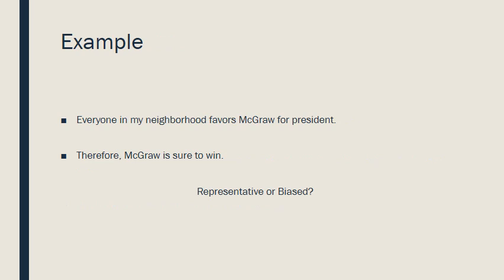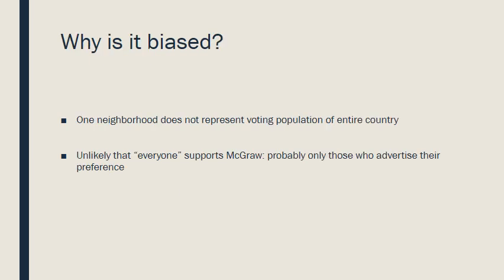Let's look at the example given in the homework assignment: 'Everyone in my neighborhood favors McGraw for president, therefore McGraw is sure to win.' We want to ask ourselves: is the evidence being used representative or biased? Is this a solid argument? Well, one neighborhood does not represent the voting population of the entire country. You can't know from one street how the entire population will vote — it's simply not representative.